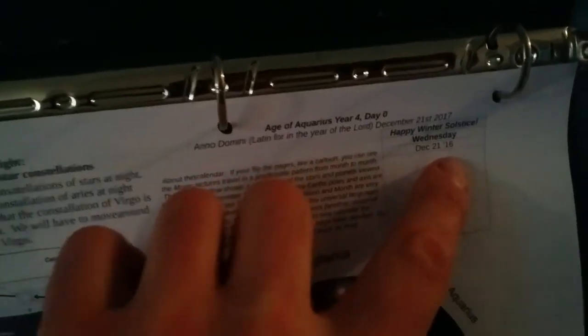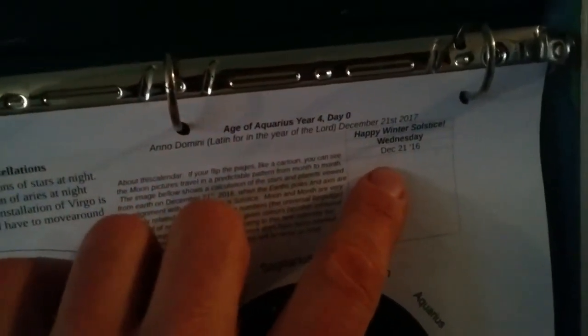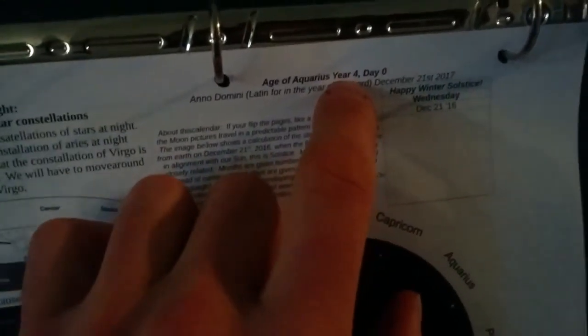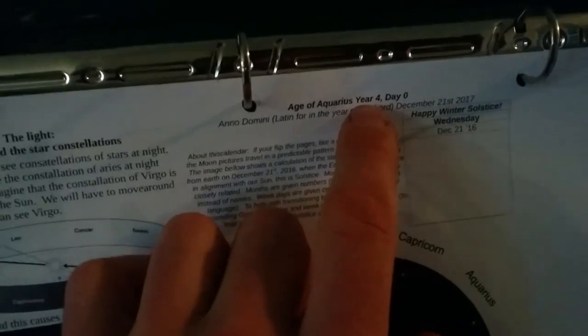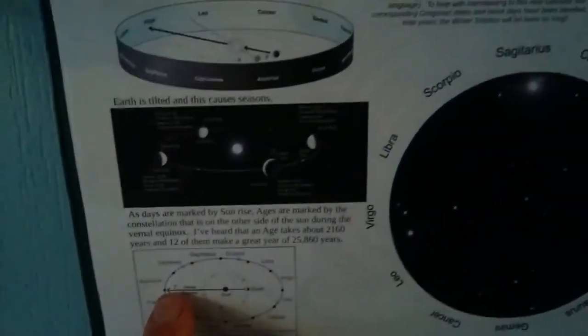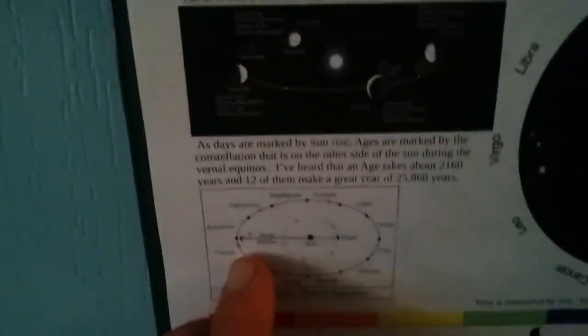This calendar starts on December 21st. That's the Gregorian calendar date. Well, on this calendar, that's day zero. And I started doing this calendar in 2012 when people were talking about it's the end of the world. I think what they were actually talking about was that it's the end of the Age of Pisces.